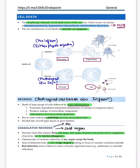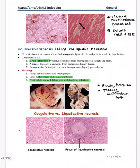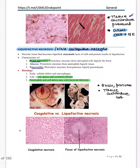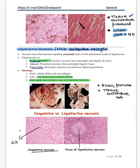Types of necrosis: coagulative necrosis is the most common, seen in solid organs. The tissue architecture is preserved and microscopically you see ghost cells. Liquefactive necrosis is seen in two organs — brain and pancreas. In the brain it is also called colliquative necrosis, showing cavitation and cystic spaces on the Robbins image. Ghost cells are seen in coagulative, while liquefactive shows necrotic material and debris.